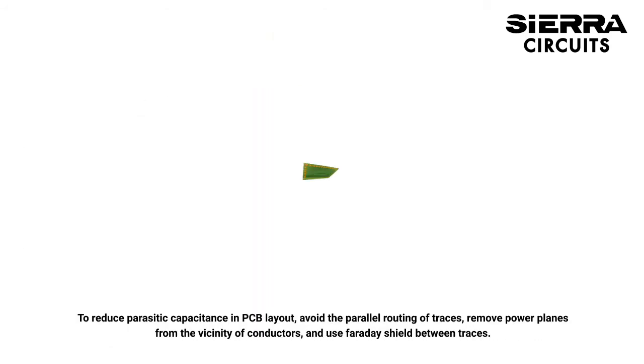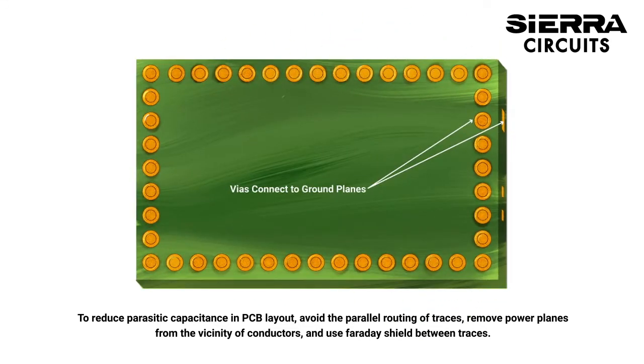To reduce parasitic capacitance in PCB layout, avoid parallel routing traces, remove power planes from the vicinity of conductors, and use Faraday's shield between traces.